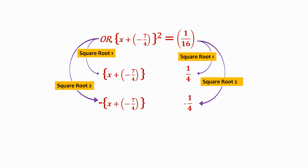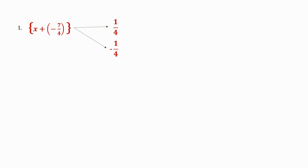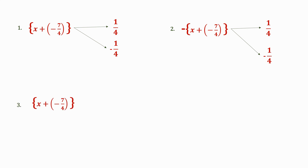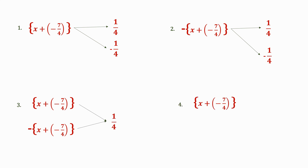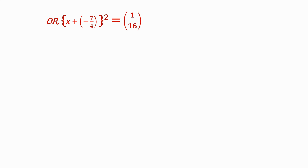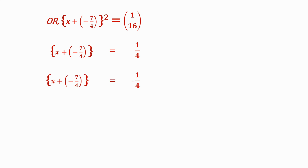Let's try and make combinations as to which roots of LHS to equate to which roots of RHS. One combination can be x + (-7/4) equated to 1/4 and -1/4. Another can be -(x + (-7/4)) equated to 1/4 and -1/4. Remember, we can use any of these combinations and arrive at the same solution. Let's use combination 1 here, giving us x + (-7/4) = 1/4 and x + (-7/4) = -1/4.